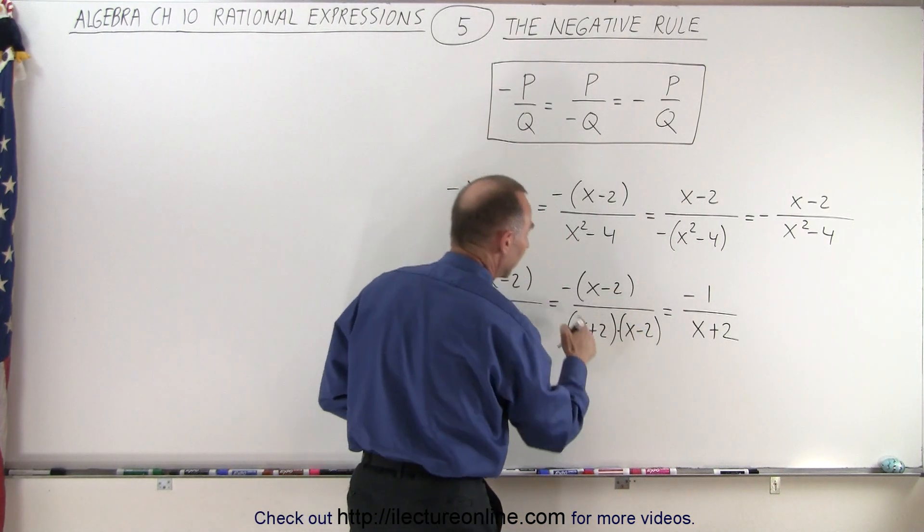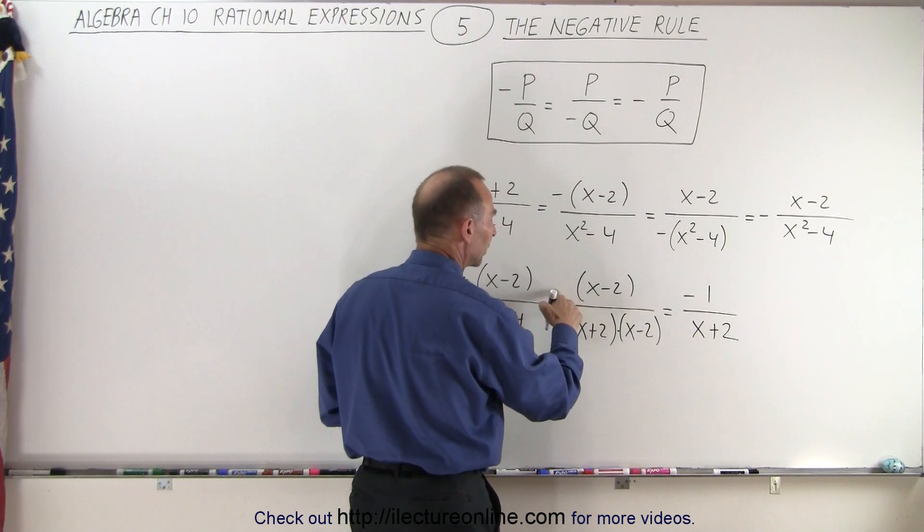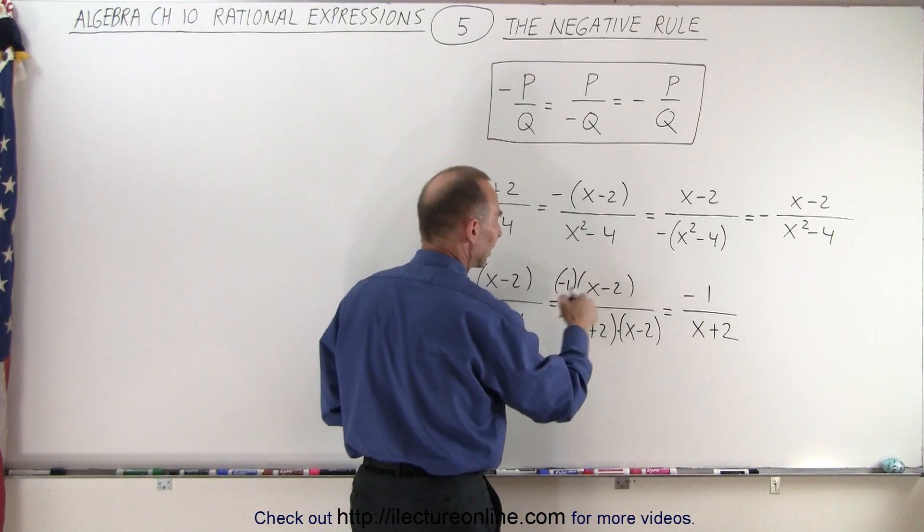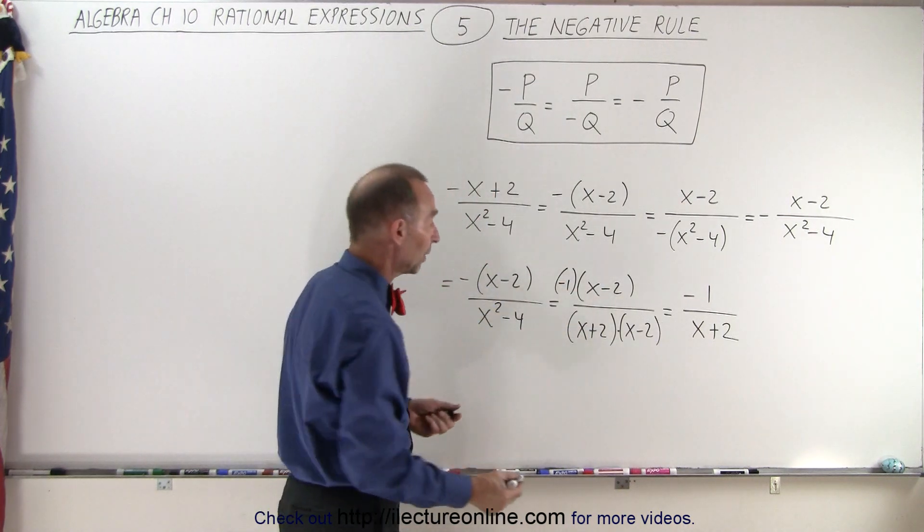Notice, this is multiplied, and this is essentially negative 1 times that, so that is like a multiplication. So we can write it as a negative 1 times that, which means it's multiplied. And since it's multiplied, we can divide both the denominator and the numerator by x minus 2.